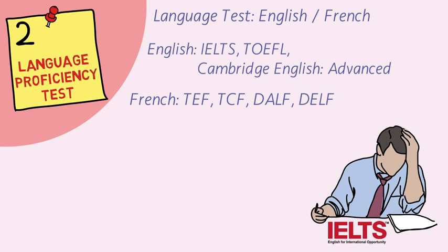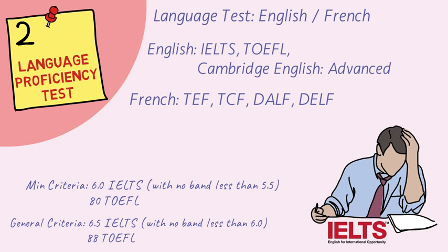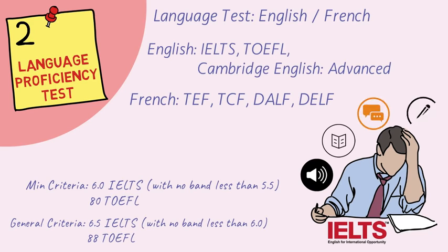Apart from English tests, you can also go for a French test like TEF, TCF, DALF, or DELF. Most colleges and universities ask for a minimum of 6 bands in IELTS with no band less than 5.5, or a TOEFL score of around 80. The general criteria is 6.5 in IELTS with no band less than 6.0, or 88 in TOEFL. If you could not achieve your goal in the first test, you can retake it — there is no limit. The IELTS Academic fee is around 13,000 to 14,000 rupees in India, available through IDP India or British Council.